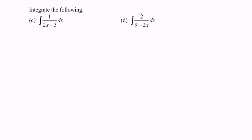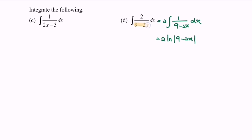Next, referring to example d, we will have 2 multiplied with integrate 1 over 9 minus 2x with respect to x. If we integrate, we will obtain 2 ln|9 minus 2x|. Focus on this part and differentiate — we will have negative 2. So meaning that we divide by negative 2, plus c. Simplifying, we will have negative ln|9 minus 2x| plus c.